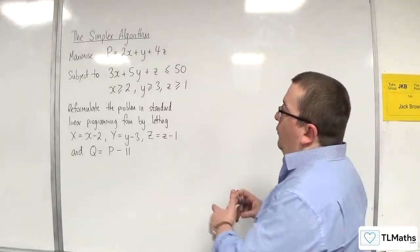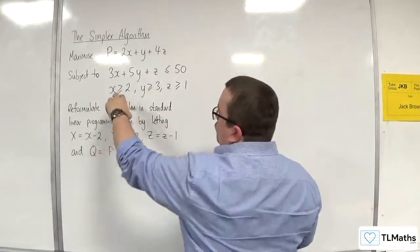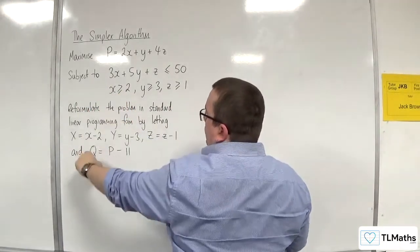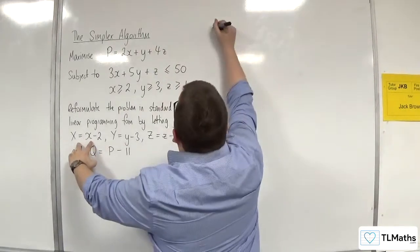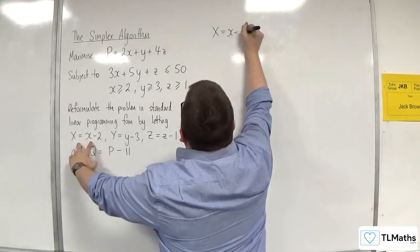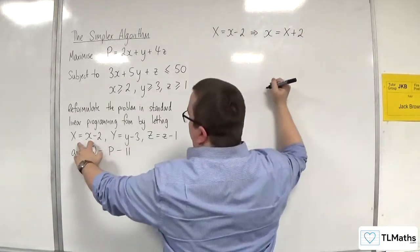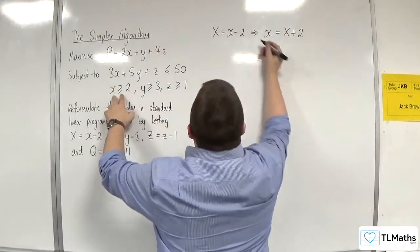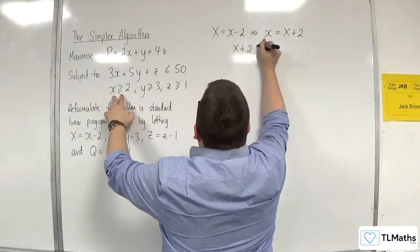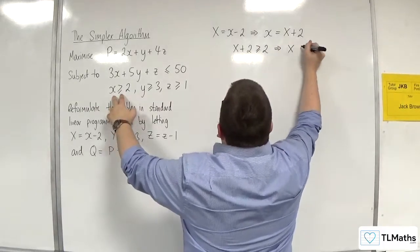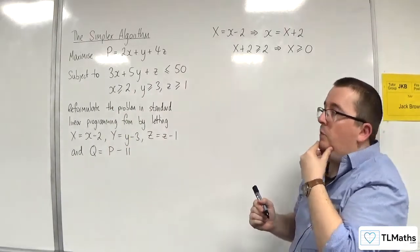First, I'm going to deal with the variable inequalities. If capital X equals x take away 2, then little x can be replaced with X plus 2. So X plus 2 ≥ 2, which means capital X ≥ 0. That's what that inequality becomes.